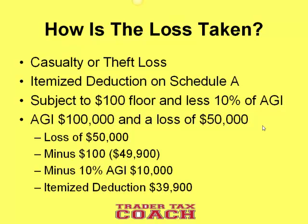Looking at a quick example: if you had adjusted gross income of $100,000 and a loss of $50,000, you take the $50,000 loss, subtract the $100 minimum floor, leaving $49,900, then subtract 10% of AGI — which is $10,000 — leaving you with an itemized deduction of $39,900.